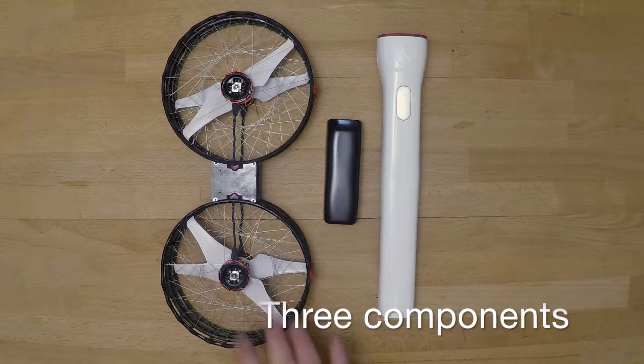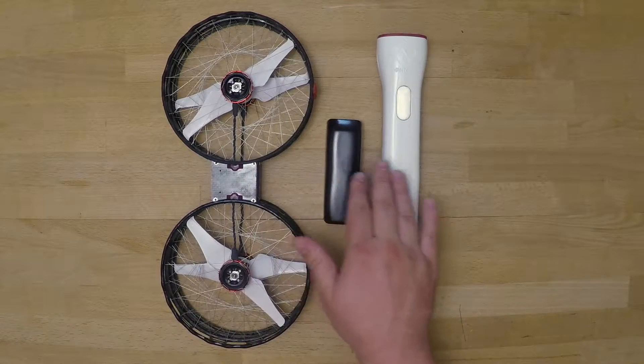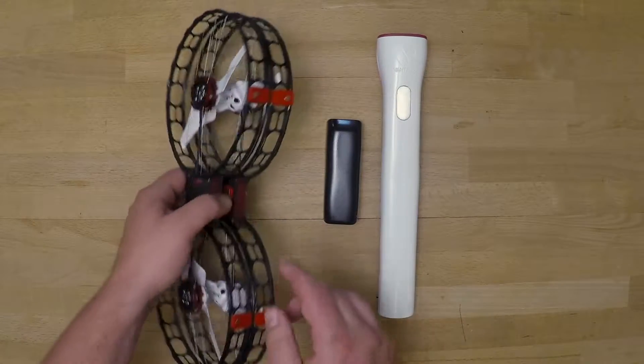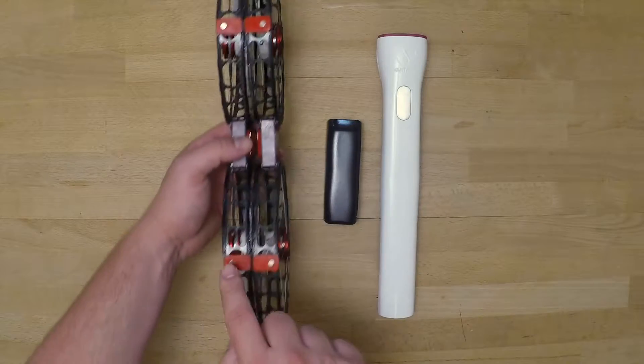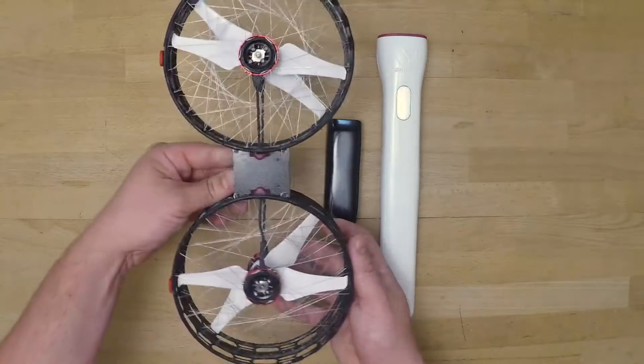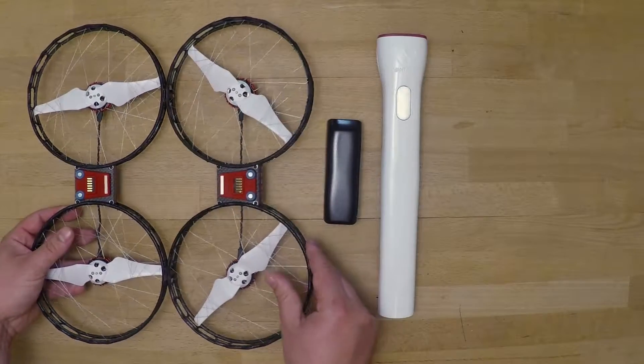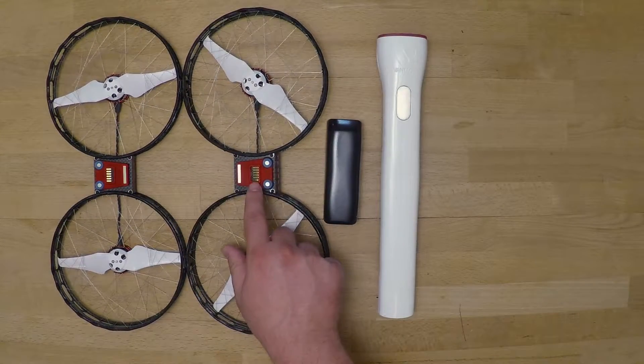There are three components to Snap: the rotors, the battery, and the body. You can see on the outside of the rotors there are four little magnets so that when you open up the rotors it'll hold firm.